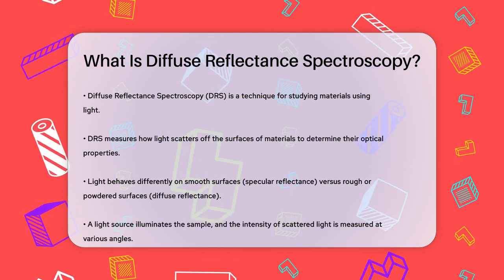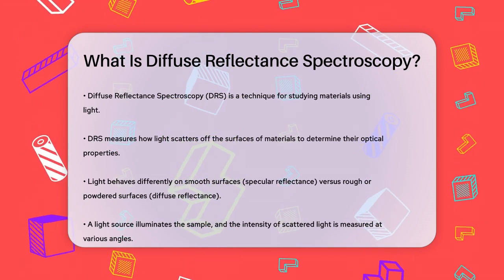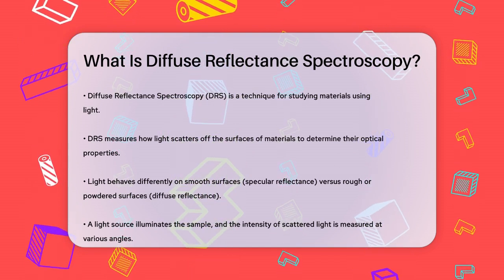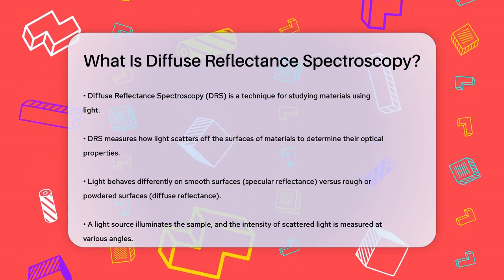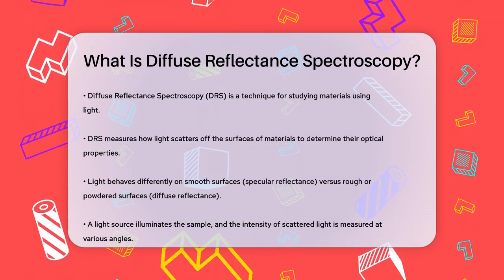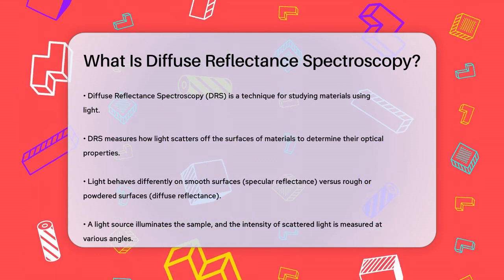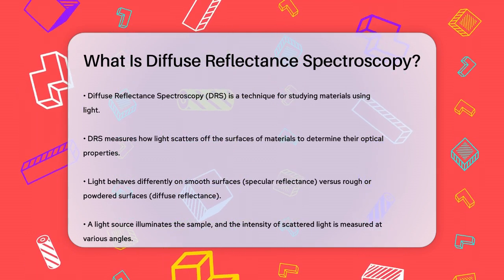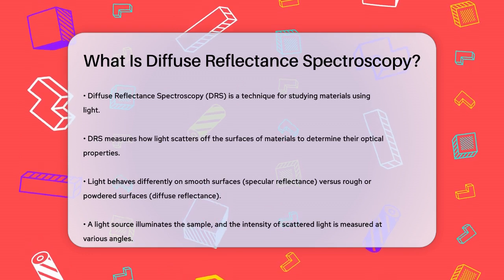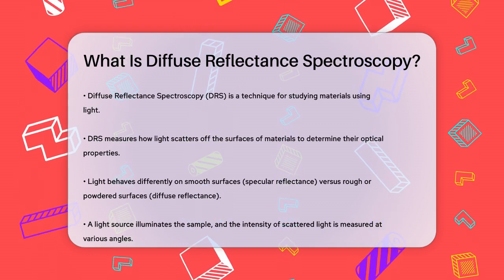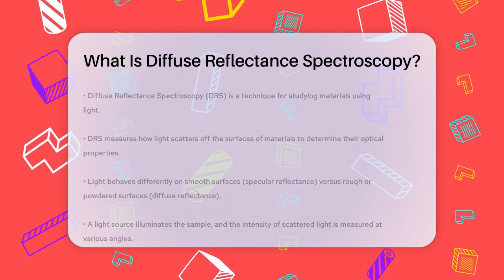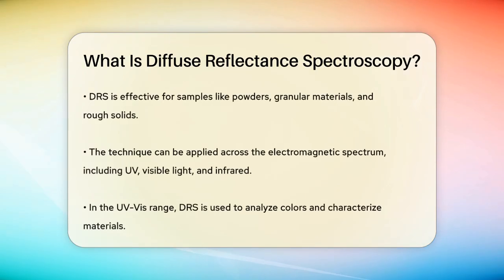DRS is a way to study the optical properties of materials by measuring how light scatters off their surfaces. When light hits a smooth surface, it bounces back in one direction, which is called specular reflectance. But when light hits a rough or powdered surface, it scatters in all directions, and this is what DRS measures.